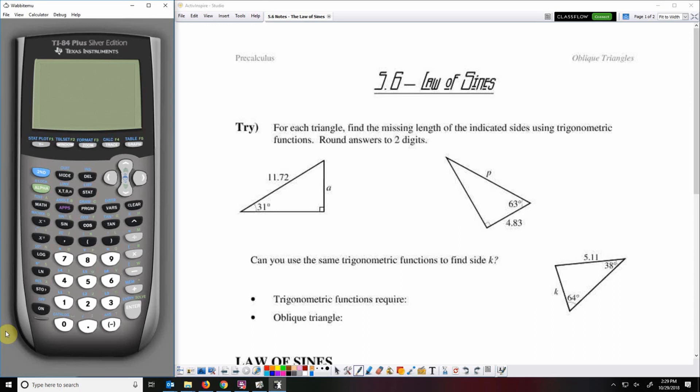Today we're going to talk about the law of sines, but first we're going to do a little bit of review of right triangle trig. So I want to find the value of the variable here and we're going to round it to two decimal places.